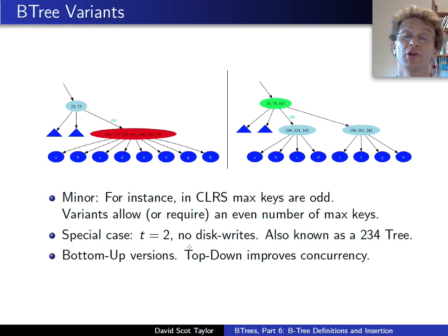There's a bottom-up version. We looked at the top-down version here to match the text. The top-down version probably allows for better concurrency. You can have more threads working on the tree at once without having to lock up too much of the tree if you're doing it in a top-down way.